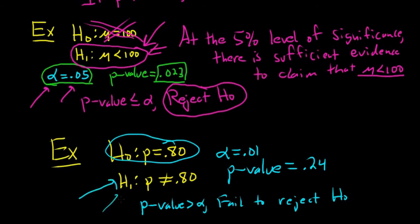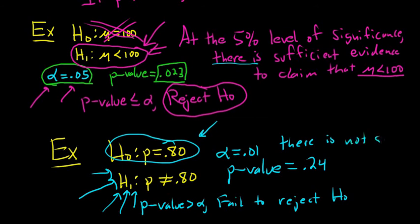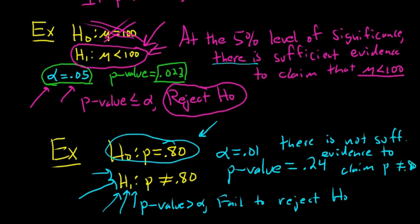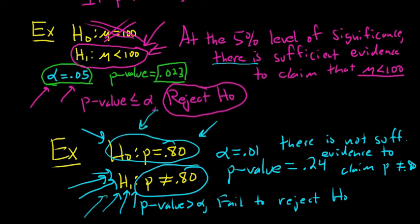Because we fail to reject, we don't have enough evidence to say the alternative is true. So there is not sufficient evidence to claim that p is not equal to 0.80. To summarize: whenever you reject the null hypothesis, there is sufficient evidence to support H1. If you fail to reject the null hypothesis, there is not sufficient evidence to support H1. I hope this video has made sense. That's it.